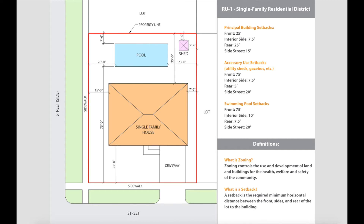Let's walk through an actual example to better understand how setbacks apply to a property. Here we're looking at a single family house — this red line represents the property line. We have a sidewalk, the street, and a side street, making this a corner lot with other lots adjacent and behind. This example is set in a RU1 single family residential district. Let's go through principal building setbacks one at a time.